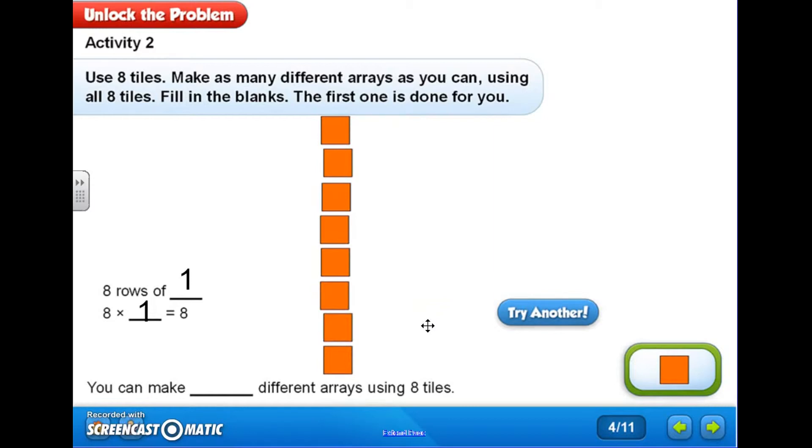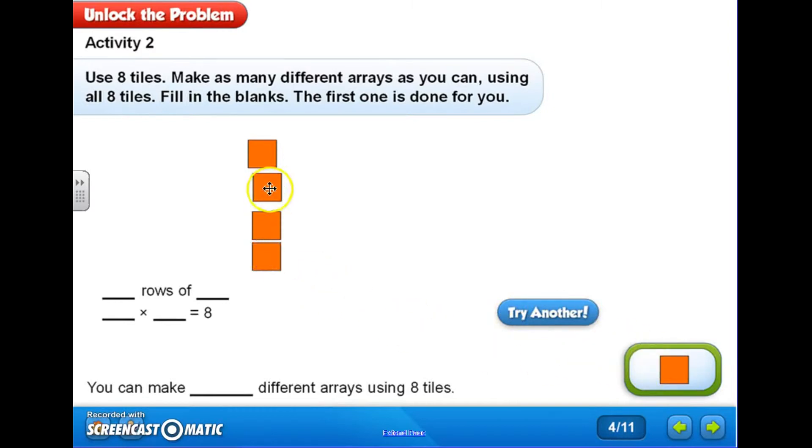So now I know that that's another way for me to create an array using the eight tiles: one row of eight or eight rows of one. Let's try one more. Let's see. I'm still working with the number eight and I know that four is half of eight, so I'm thinking maybe I could do four rows.